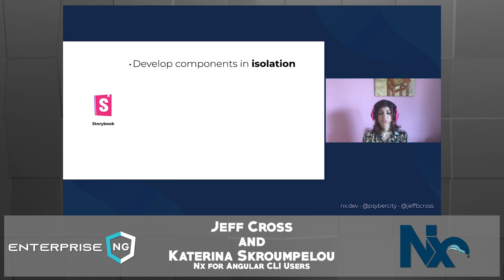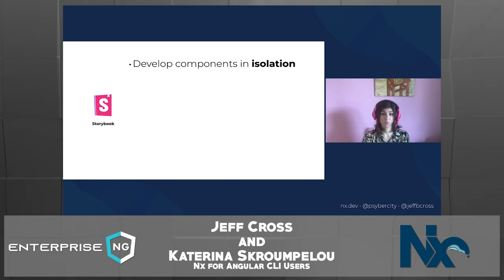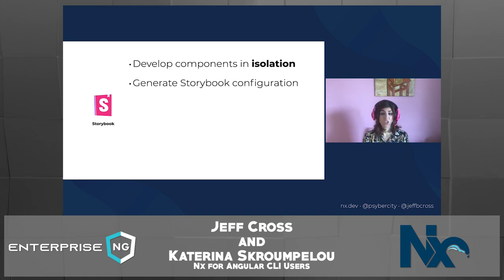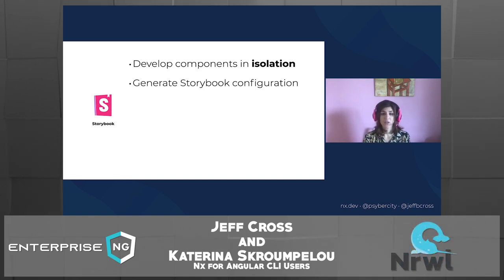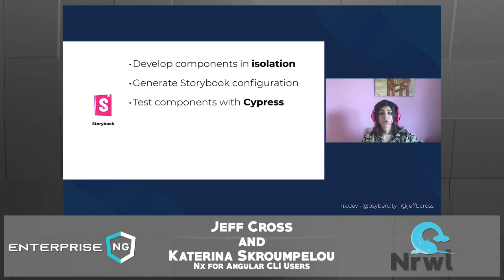Storybook is an environment for developing UI components in isolation. It allows you to browse a component library, view the different states of its components, and interactively develop and test components. This is super useful, especially if you're in a large team or organization with shared libraries. With the NX Storybook plugin, you can generate Storybook configurations for individual projects — be it apps or libraries — using either Angular or React. When generating a Storybook configuration, you also get the option to set up an E2E Cypress app configured to run against the project's Storybook instance.